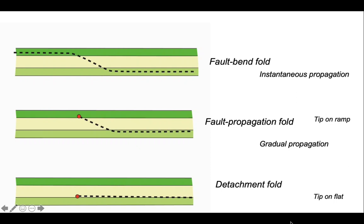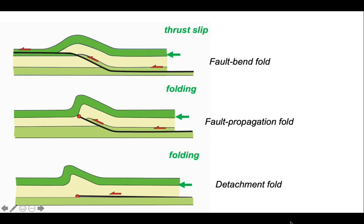So let's see how this works. The fault bend fold, as we've seen, has instantaneous fault propagation through the stratigraphy. In the two other examples, the fault propagates slower relative to the displacement, and so propagation is gradual as the thrust acquires displacement. In the middle example, the instantaneous tip is forming on the thrust ramp. In the lower example, the tip is on the flat. So let's push these in and make our faults.